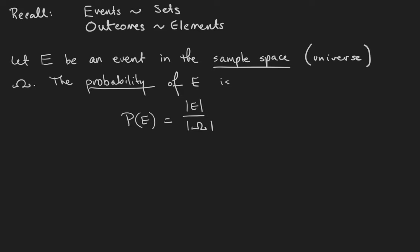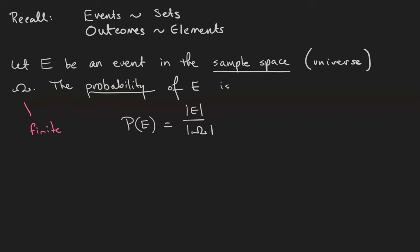When E is an event in the sample space, which we call the universe omega, the probability that E occurs is the cardinality of E divided by the cardinality of omega. An important assumption about omega is that it is finite. It's possible to do probability with infinite sets, but we won't be.